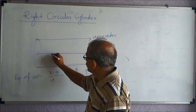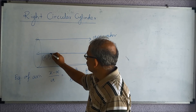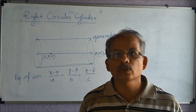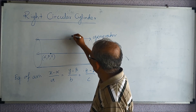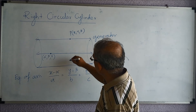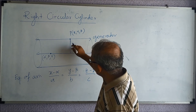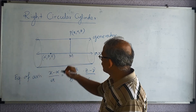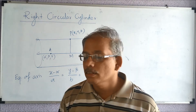Let α, β, γ be a point on the axis. We want to find the locus of a point on the generator, so we take a point P(x, y, z) on the generator and drop a perpendicular from P towards the axis. Let the perpendicular meet the axis at point M, and we call the point on the axis A.